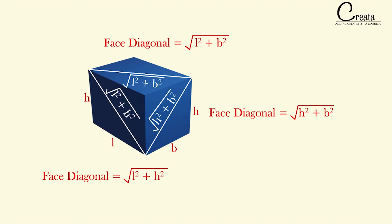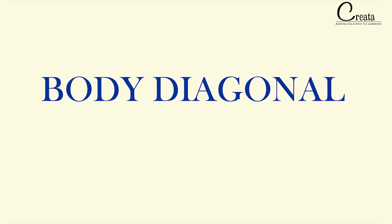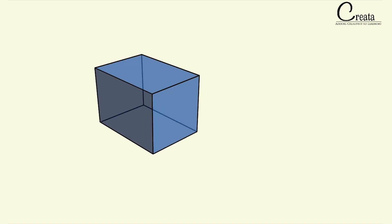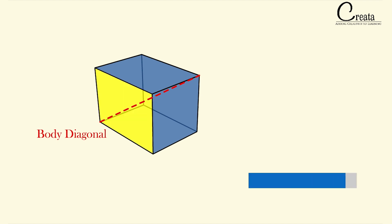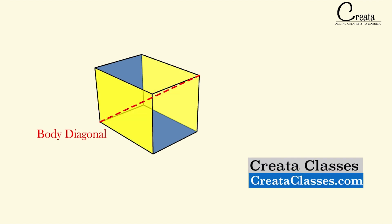Moving further, our next concept is the body diagonal. We have covered the face diagonal, which is the diagonal of a face of the cuboid. The body diagonal is the diagonal of the cuboid joining a vertex of one face with the opposite vertex of the opposite face. For this cuboid, this line here is the body diagonal — it joins one vertex of this face with the opposite vertex of the opposite face.